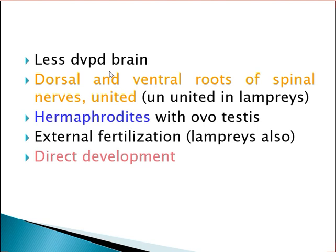The brain is less developed in Myxene. There is also a difference in the structure of the spinal nerves originating from the spinal cord: in Myxene the spinal nerves have united dorsal and ventral roots, whereas in Petromyzon they are separate or ununited.